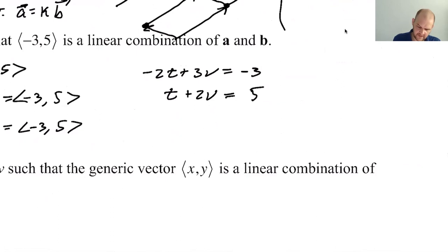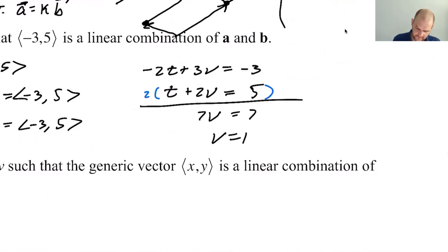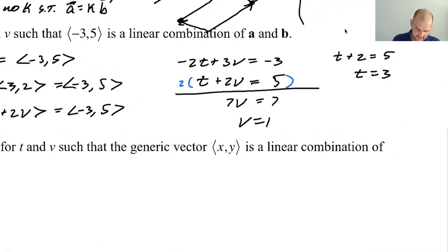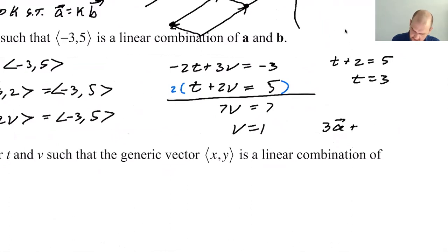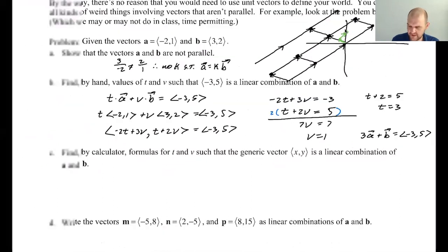So what good does that do me? Well, that's T times A is negative 2, 1 plus V times 3, 2 equals negative 3, 5. So that tells me, so let's actually do it. On this side, we'll get negative 2T plus 3V. Then we'll get T plus 2V equals negative 3, 5. So from there, I get two equations. I get negative 2T plus 3V equals negative 3. And also, T plus 2V equals 5. I'm going to double this and then add down. So that'll eliminate the T's. I'll get 7V equals 7, so V is 1. And then if V is 1, I get T plus 2 is 5, so T is 3.